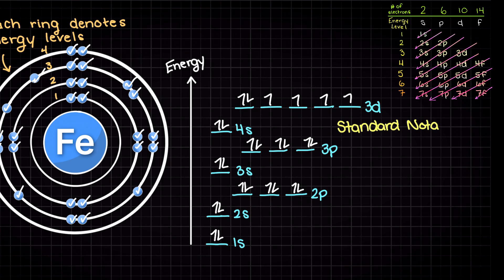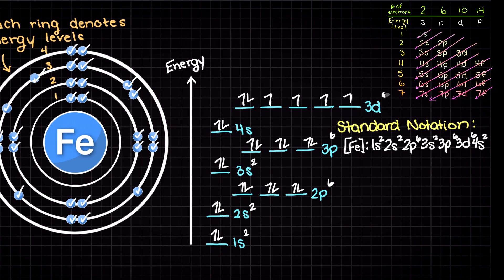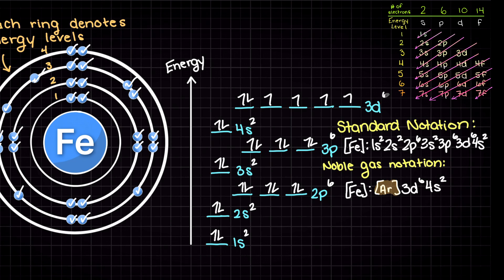We can now write out the standard notation like so. This is essentially just a more concise way of writing our above electron energy diagram. To write the noble gas notation, we simply look at the noble gas that has a lower atomic number than iron — so this is going to be argon. We simply shorten this section as argon's ground state electron configuration, and then we write the remaining electrons like so.